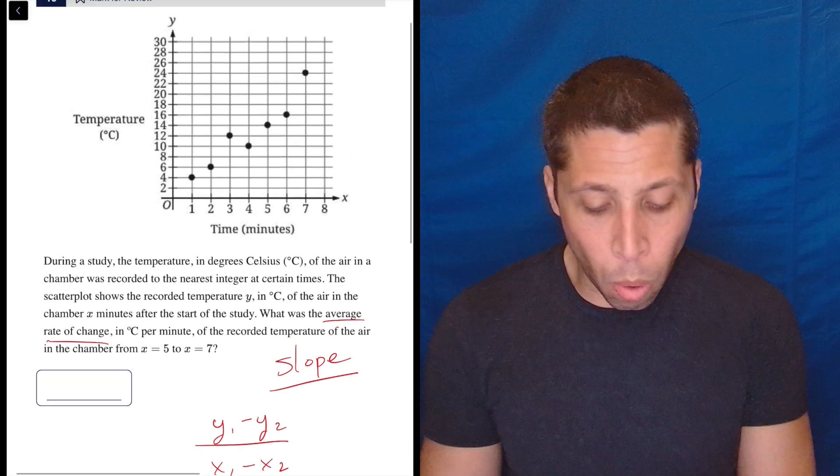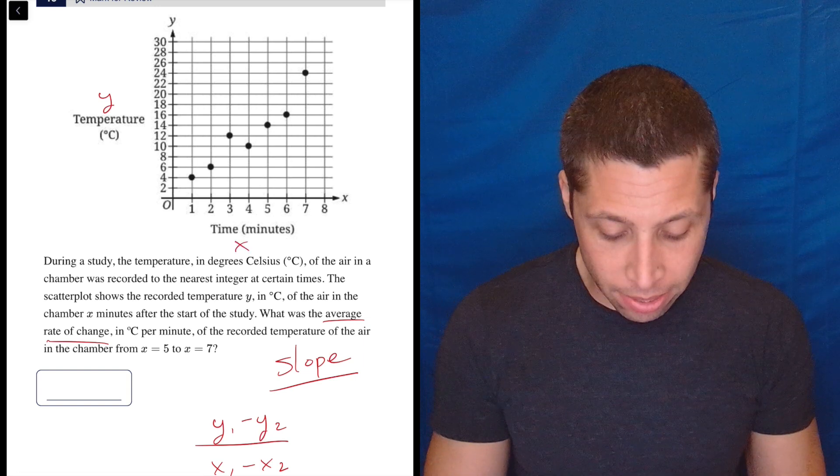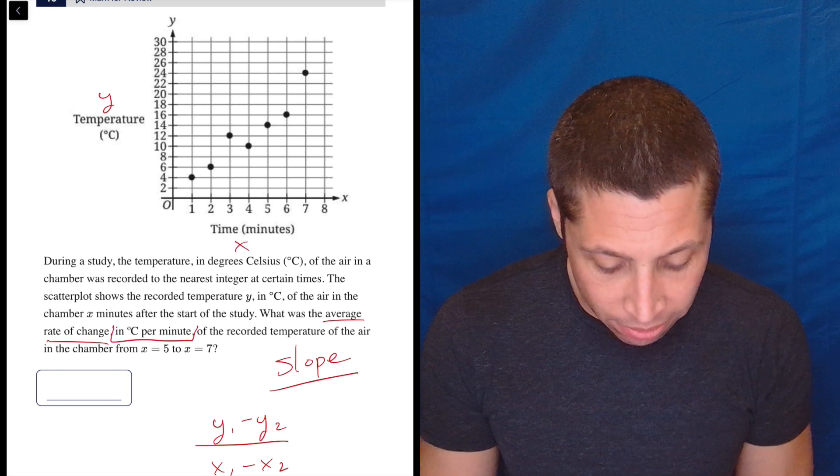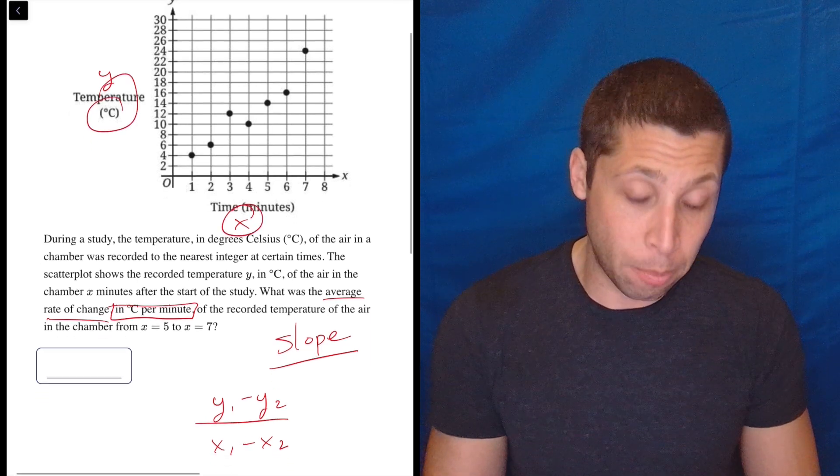But we were told that y is the temperature and x is the minutes, and look what they want: in degrees Celsius per minute. So in y per x, right? So y over x, that seems good.